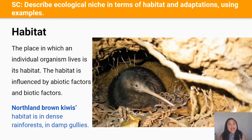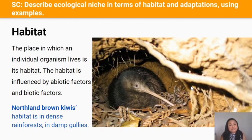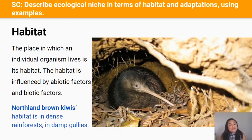Let's start with habitat. A habitat is the place in which an individual organism lives, and this habitat is influenced by abiotic factors such as temperature, humidity, rainfall and so on. Abiotic factors are non-living factors. For example, Northland brown kiwis can be found inhabiting dense rainforests and damp gullies — large ditches or small valleys carved out by water. These kiwis rely on their habitat being damp and the soil being moist because they feed on earthworms found in those environments.